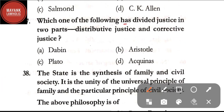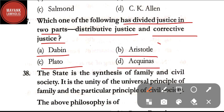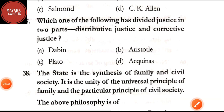Question number 37: which one of the following has divided justice into two parts — distributive justice and corrective justice — option A: Debon; option B: Aristotle; option C: Plato; option D: Aquinas. The correct answer is option B, Aristotle.